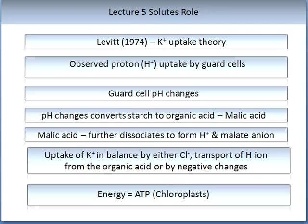It was Leavitt in 1974 who proposed the potassium uptake theory, after conducting experiments on stomata guard cells. He observed that protons — hydrogen ions — were taken up by the guard cells. This changed the pH of the guard cells. Once the pH changed, a conversion from sugar starch into an organic acid, malic acid, occurred. With the accumulation of malic acid, further dissociation forms hydrogen ions and malate anion. This results in uptake of potassium, balanced by either chlorine, transport of hydrogen ions from the organic acid, or by negative charges.